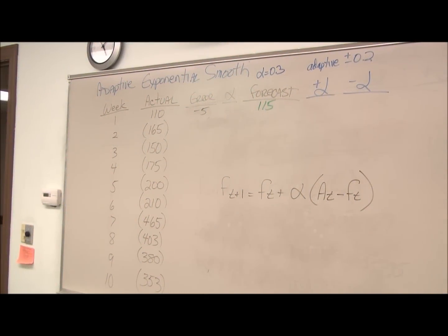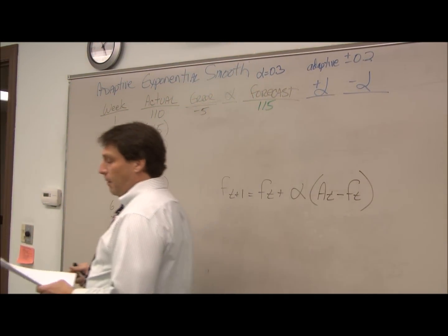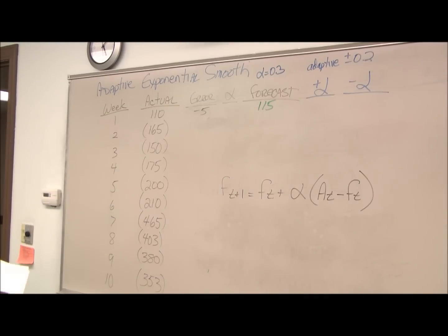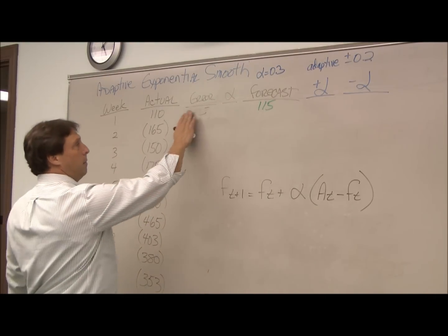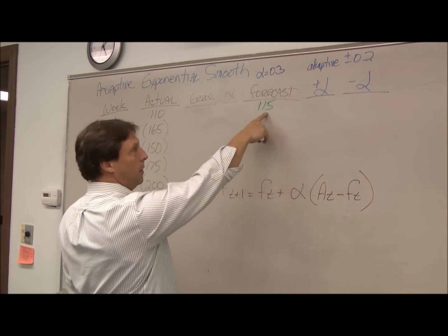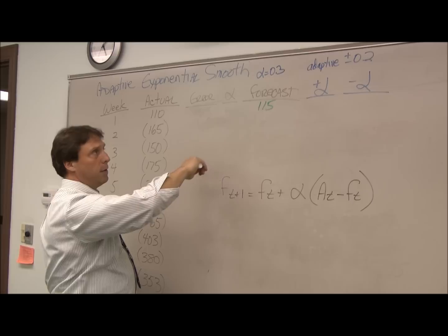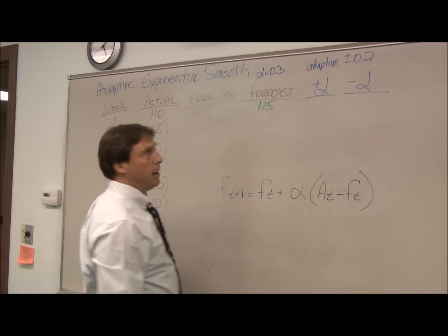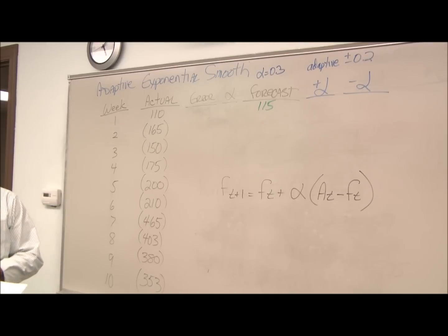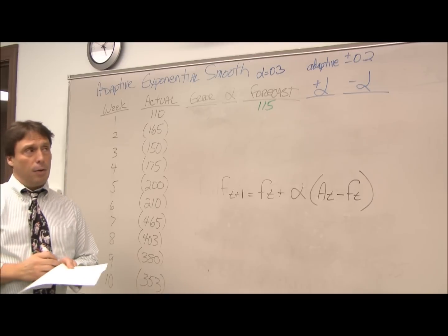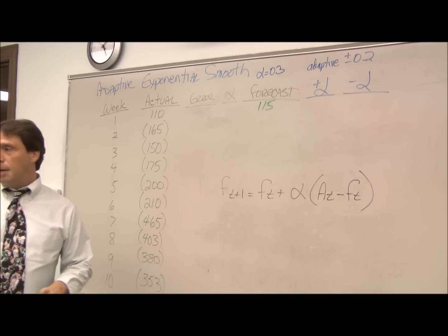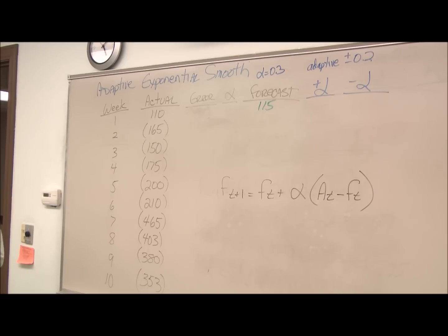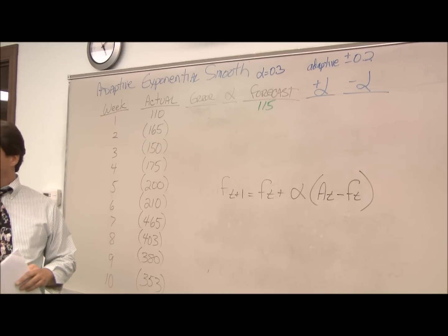Alright, now we're going to do an example of adaptive exponential smoothing. We're given the forecast for the next month which is 115, we're given the alpha 0.3, and we know our adaptive rate is plus or minus 0.02. Generally these are used if you think the economy is going to be varying along with your forecast—you use the adaptive to simulate the economy or other environmental features driving your forecast.